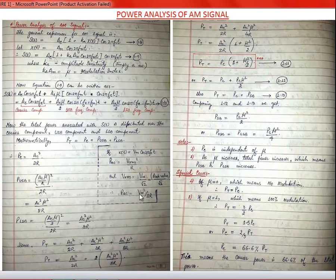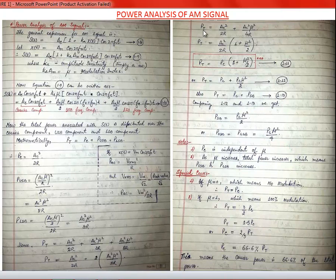Substituting the corresponding values: the peak value in the carrier component is A_C, and A_C·μ/2 in each sideband. The corresponding powers give a total: P_t = A_C²/(2R) + A_C²·μ²/(8R) + A_C²·μ²/(8R). Combining the two sideband terms: P_t = A_C²/(2R) + 2·A_C²·μ²/(8R) = [A_C²/(2R)]·(1 + μ²/2).